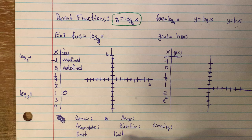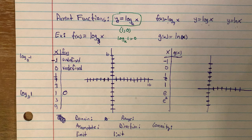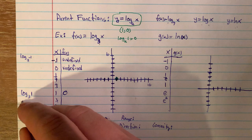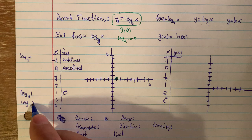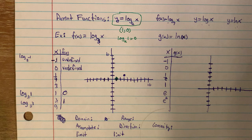Log base 3 of 1 asks: 3 to what power gets you 1? That's 0. This is an important point for every parent function — all parent functions will have the point (1, 0) on them, because log base anything of 1 always equals 0. If you do transformations that point could move, but for parent functions, this is where it will be.